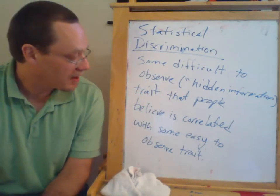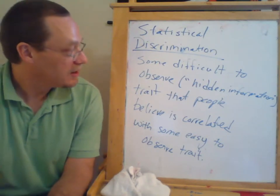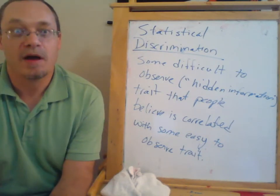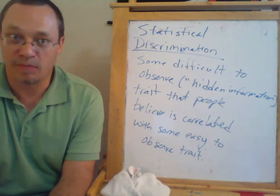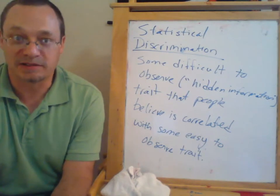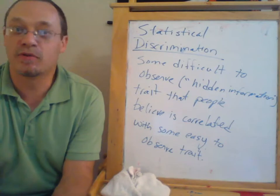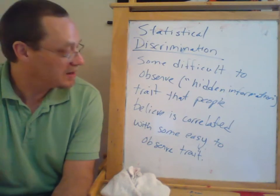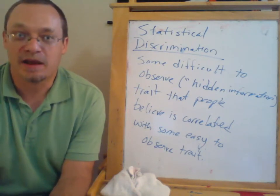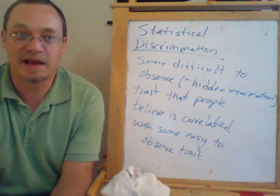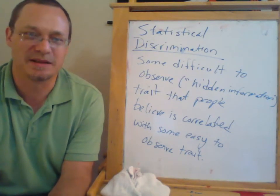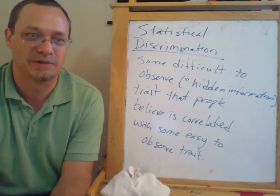A classic example is that while very few men are child molesters, a much higher proportion of child molesters are men. So being a man is correlated with being a child molester. If you were out there looking for a babysitter, you would potentially take that into account. A 30-year-old woman wanting to be a babysitter doesn't seem strange, but a 30-year-old man wanting to be a babysitter might seem a little strange — and as a parent, you might be worried about that.